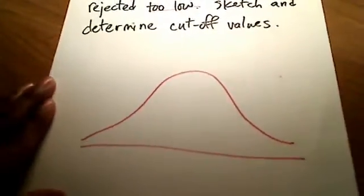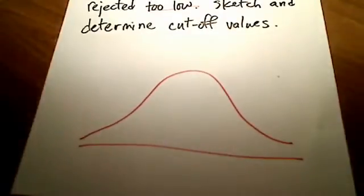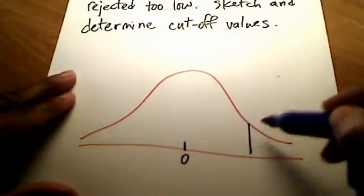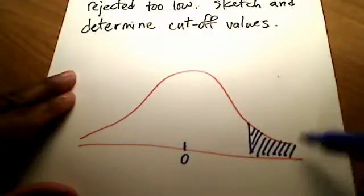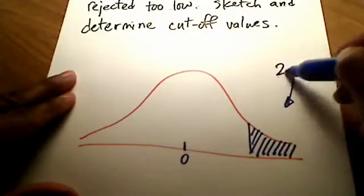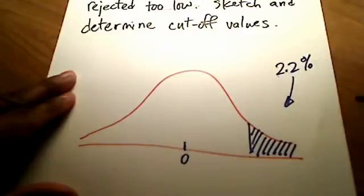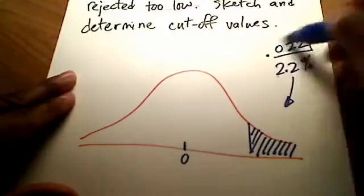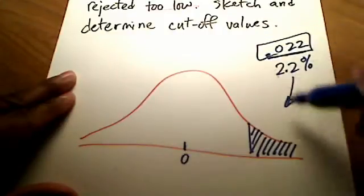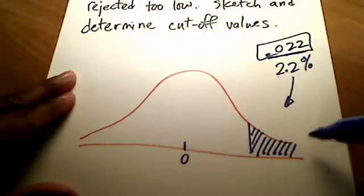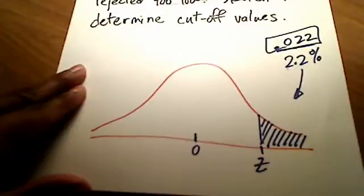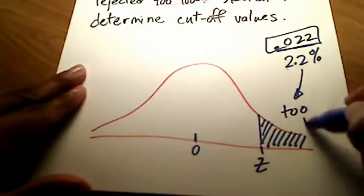Here's my normal distribution picture. What they're telling us is we have a tail on the right side, with zero sitting in the middle. If I shade to the right of it, that 2.2% — or 0.022 as a decimal — gives me an area of 0.022 on the right side, and we want to know what is that corresponding z number, because these thermometers are too high.